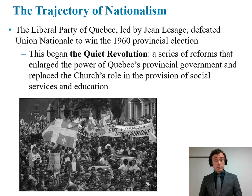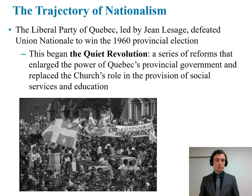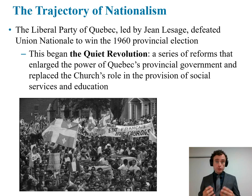The leader of the Union Nationale, Maurice Duplessis, died in office in 1959. In the 1960 election, the Liberal Party led by Jean Lesage won the provincial election in Quebec. With the election of a Liberal Party of Quebec, the province began the Quiet Revolution — a series of reforms that enlarged the power of Quebec's provincial government and replaced the church's role in the provision of social services and education. The Quiet Revolution was a decade of reforms aimed at social, cultural, and economic policies that had previously been dominated by the church and would now become dominated by an enlarged provincial government.